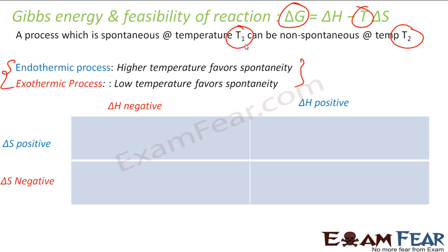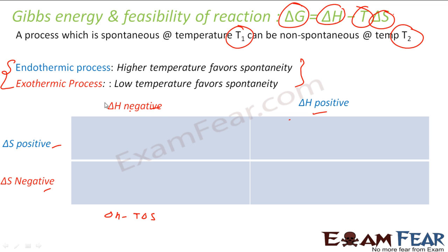Using delta H and delta S, let us consider the four possible cases. The formula is delta G equals delta H minus T times delta S. If delta H is negative and delta S is positive: delta G equals (minus X) minus T times (plus Y), which is always negative. So this case is always spontaneous regardless of temperature.